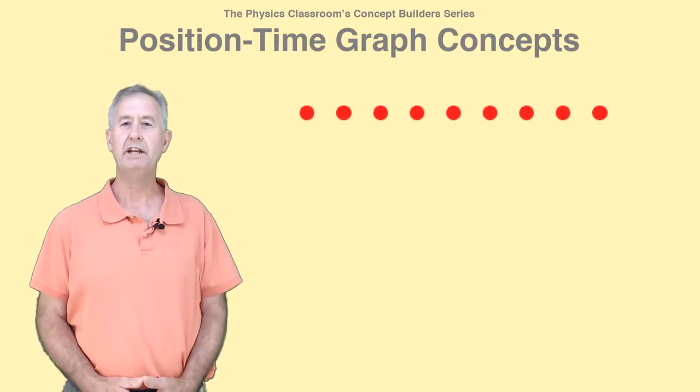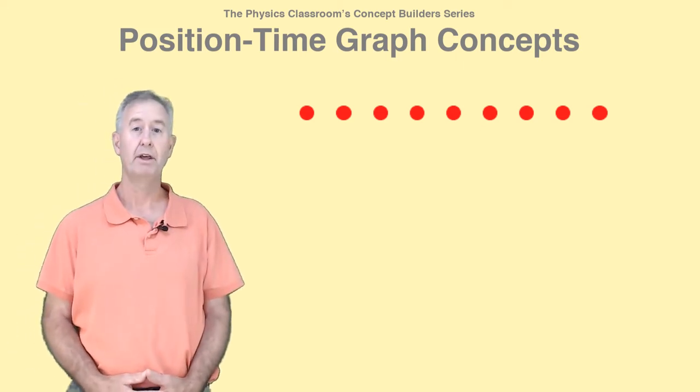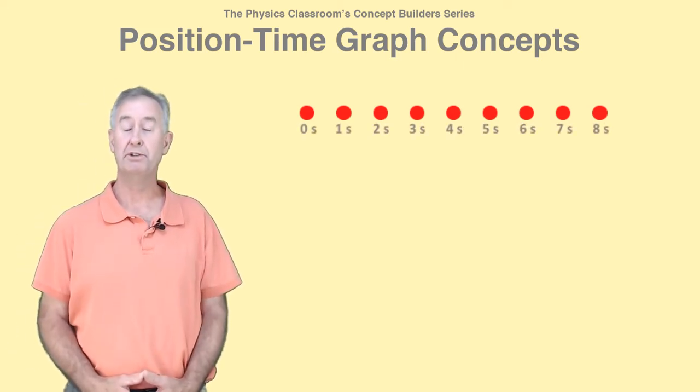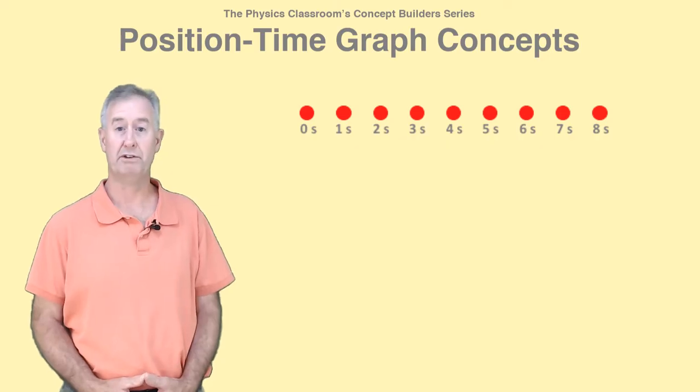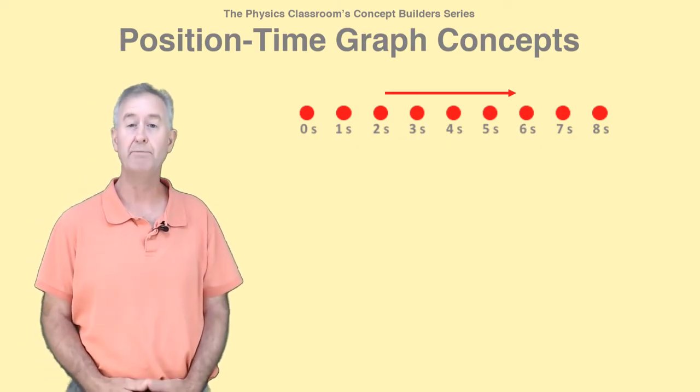Like PT graphs, dot diagrams represent the position of an object over the course of time. Each dot might represent the position at one-second intervals of time. Arrows are often used to indicate the direction the object moves.